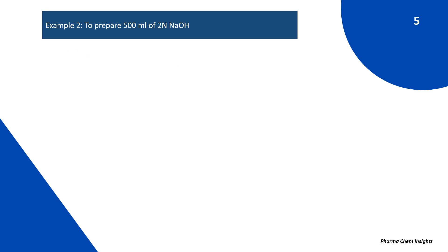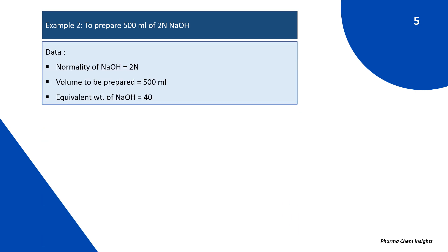Example 2: To prepare 500 ml of 2 normal NaOH. The data: normality of NaOH is 2 normal, volume to be prepared is 500 ml. Equivalent weight of NaOH = molecular weight ÷ number of replaceable OH⁻ ions. In the case of NaOH, OH⁻ ions = 1, so 40 ÷ 1 = 40. So 40 is the equivalent weight of NaOH.